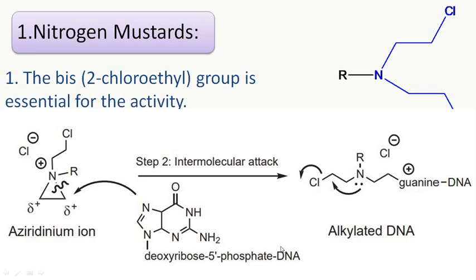A small portion of DNA is shown: the DNA is attached via a phosphate group, to which a deoxyribose sugar is attached, and to the deoxyribose sugar a nucleic base is attached — this is a guanine base. Its numbering starts from position 1 through 7. The position 7 nitrogen will attack the delta-positive carbon of the aziridinium ion.